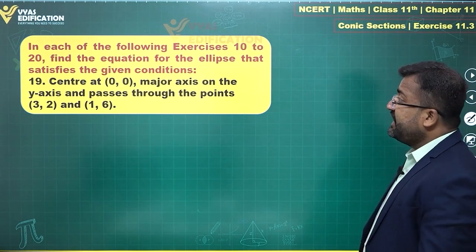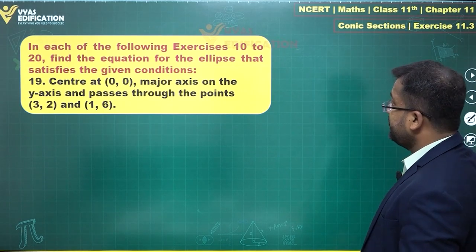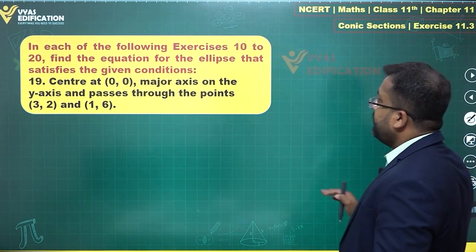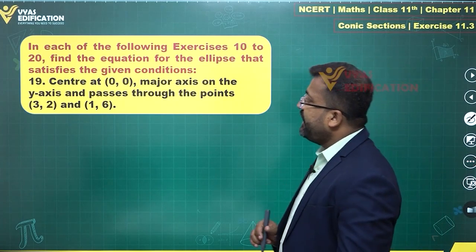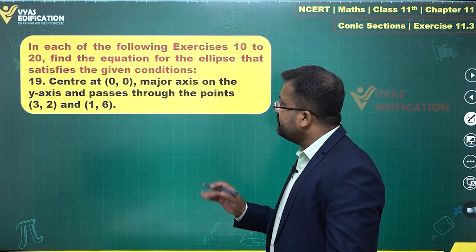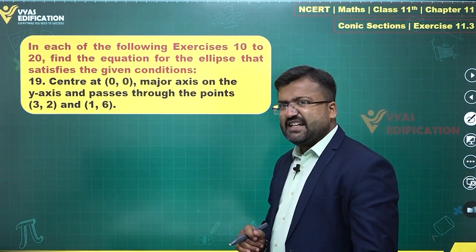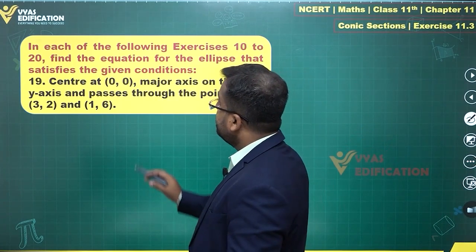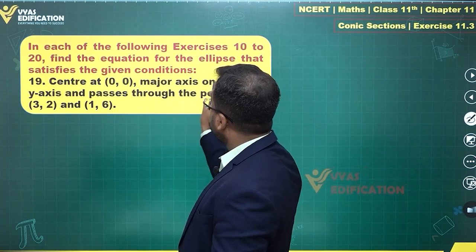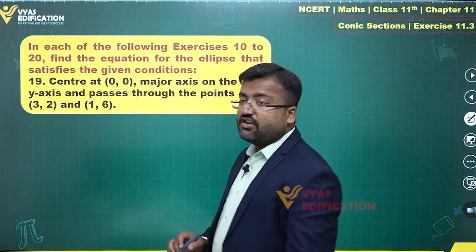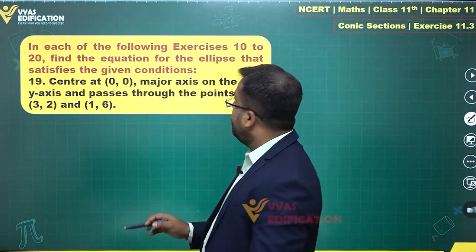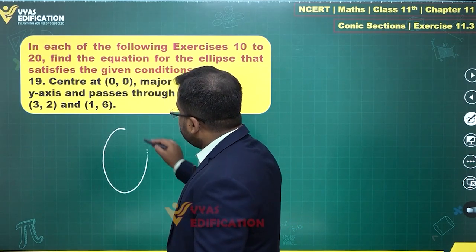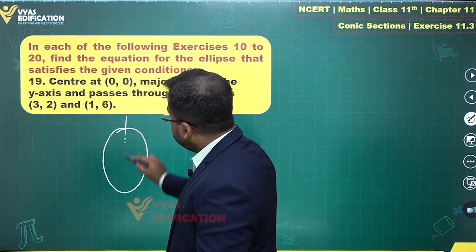Question 19 says we have center at 0 comma 0, major axis on the y-axis, and passes through certain points. Center at 0 comma 0 and major axis along the y-axis implies that this will be a vertical ellipse.